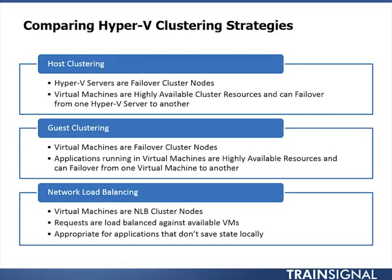A second approach is guest clustering, where virtual machines on one server are clustered together using failover clustering. What's being passed around within that cluster is the actual applications running on those VMs — an application can fail over from one VM to another. A hybrid variation is to do host clustering of physical Hyper-V servers and then use guest clustering within that environment to cluster together some of the VMs, allowing applications to fail over from one to the other.